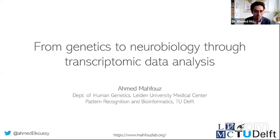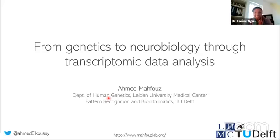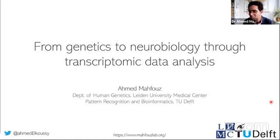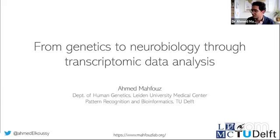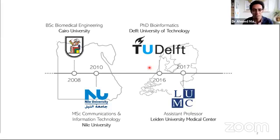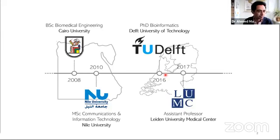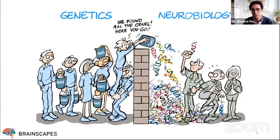Thank you very much for this very nice and generous introduction. I'm going to share my screen — perfect, you can see it. So I'm really glad to be here today. I studied engineering at Cairo University, then did my master's in communication and information technology at Nile University in Egypt, then moved to the Netherlands to pursue my PhD in bioinformatics at TU Delft. Then I moved 20 minutes away to Leiden, where I did a short postdoc and now joined as an assistant professor in the human genetics department. We are interested in relations between genetics and environmental factors to phenotypes.